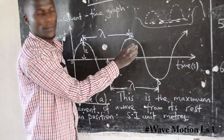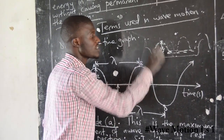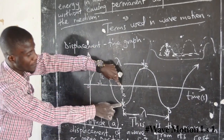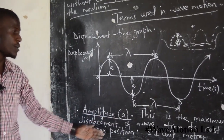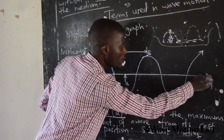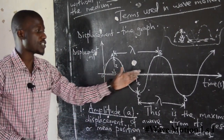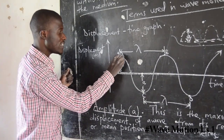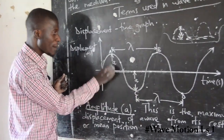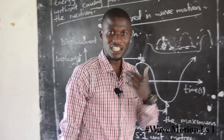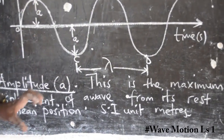For example, if this is water vibrating, the distance from its initial rest position up to where it reaches is what we term amplitude. From here up is amplitude; from here down is amplitude. You can say amplitude is the maximum displacement of a wave from its rest or equilibrium position. This line is what we call the line of zero disturbance — the rest position of the particles. The displacement of the vibrating particle from its rest position to the maximum point is amplitude.